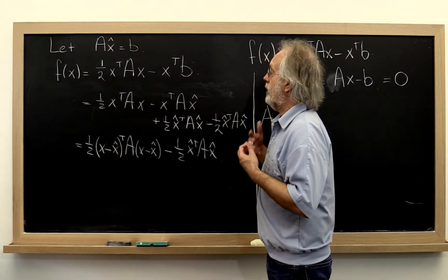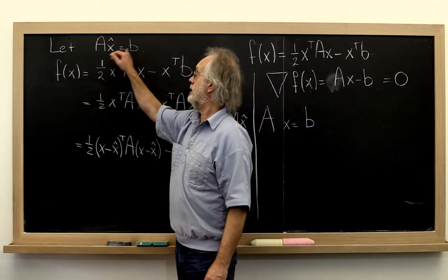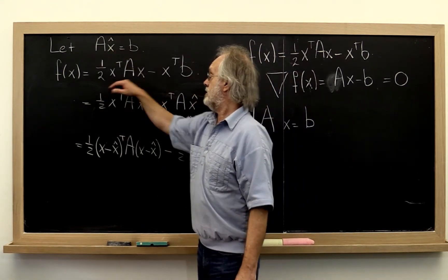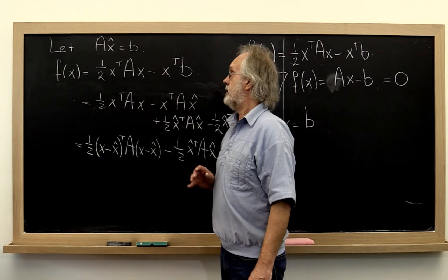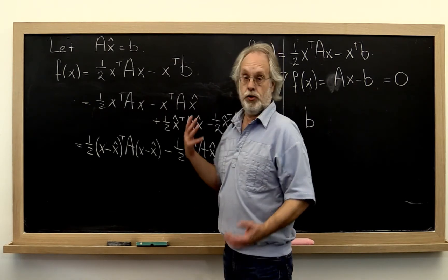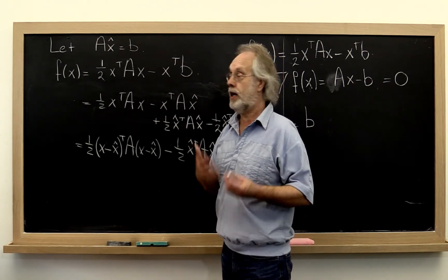We can actually show that the solution to ax equals b minimizes this function when a is symmetric positive definite without using multivariate calculus. And how does that go?